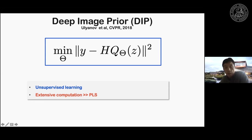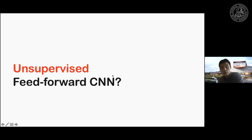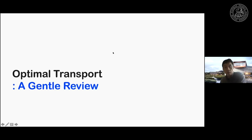However, the computation of Deep Image Prior is very extensive — more expensive than standard penalized least squares — so it cannot be used in routine medical imaging tasks. The goal therefore is: can we have unsupervised learning approaches that still use feedforward neural networks for quick, real-time inference? To understand this, I'll give a brief overview of optimal transport theory from probability theory.